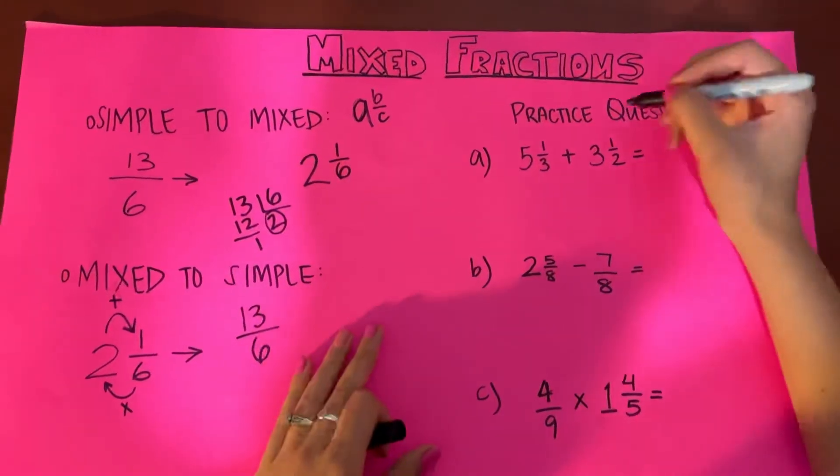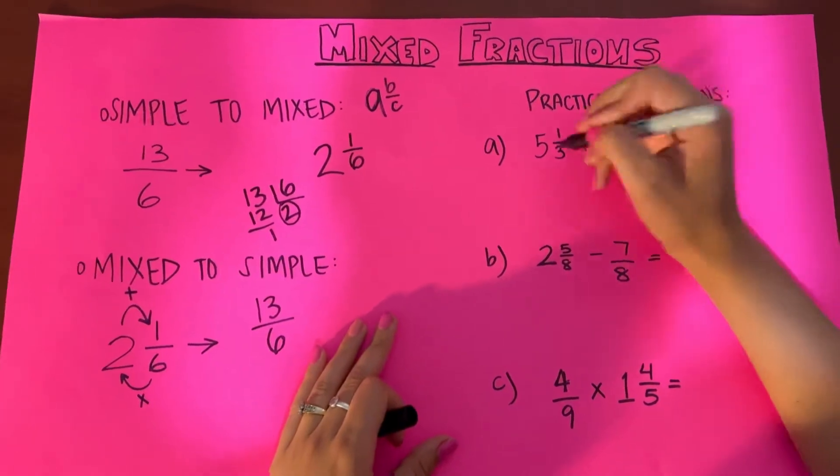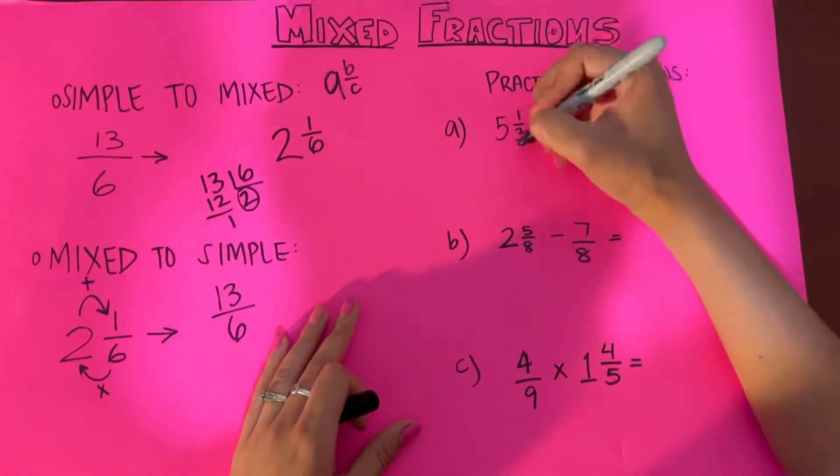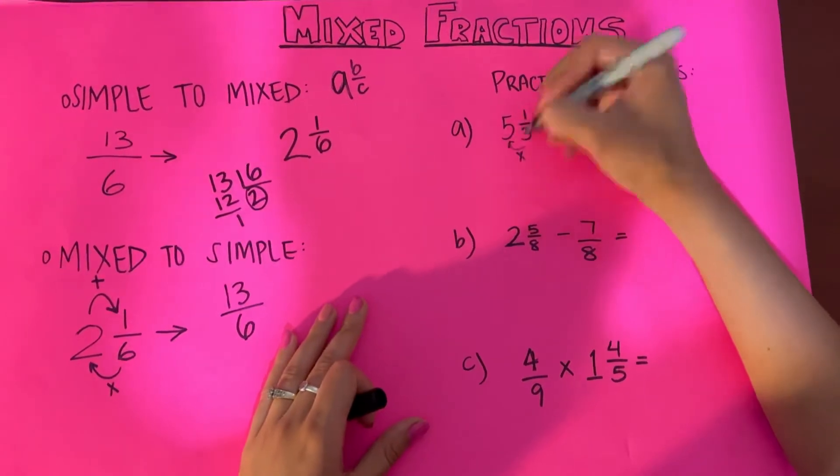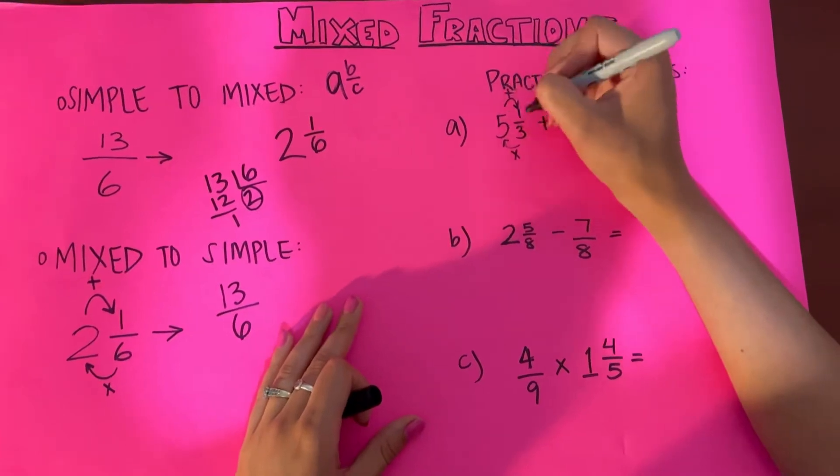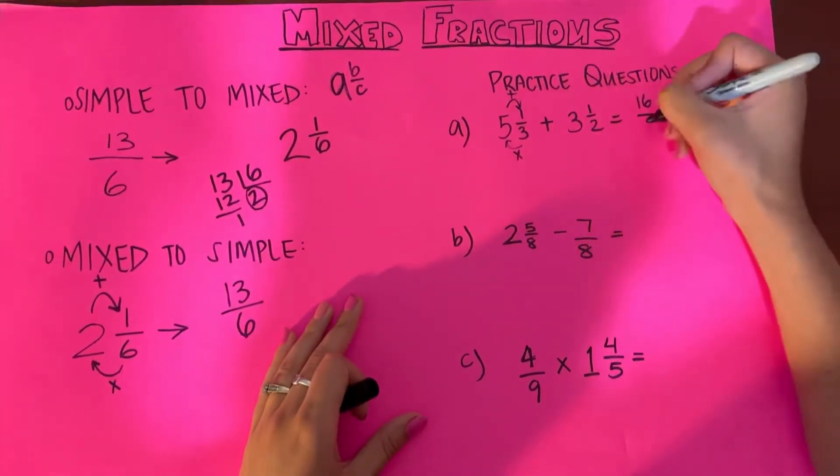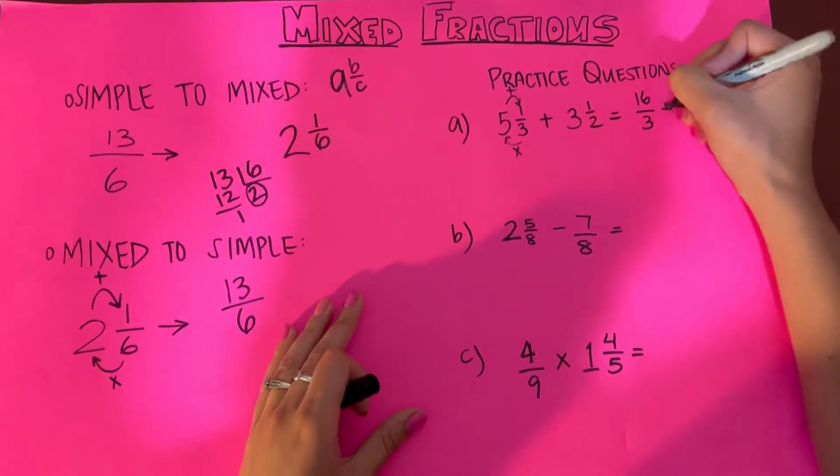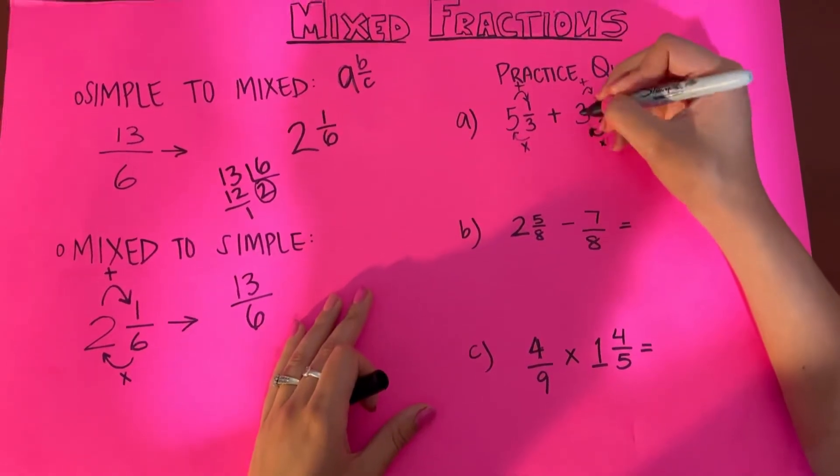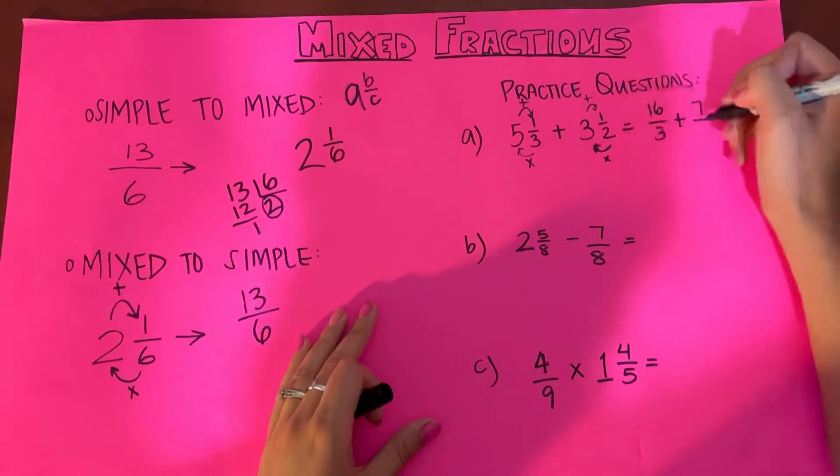So some practice questions. The first one, again, we have to convert this each one into a simple fraction to be able to add it. So we will multiply here, we will add here. So 5 multiplied by 3, 15 plus 1 is 16, and the denominator is the same, 3. Plus the same thing here: 2 multiplied by 3 is 6 plus 1, 7, and the denominator 2.